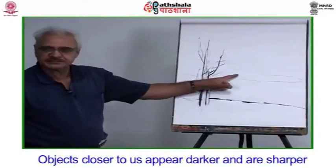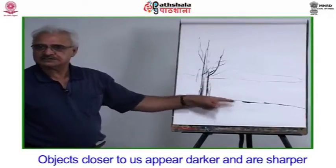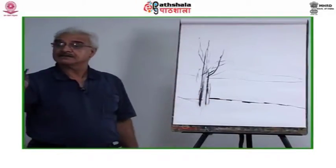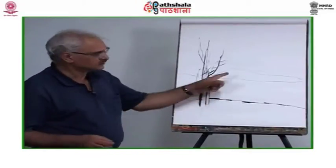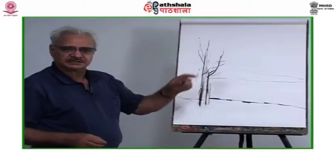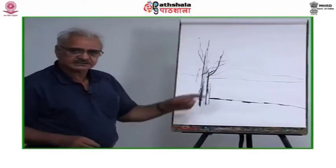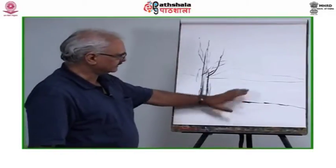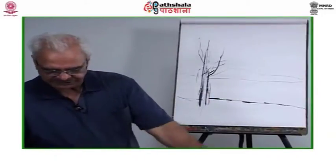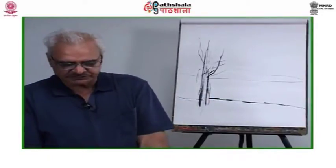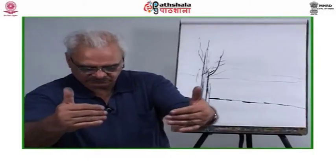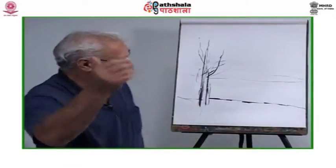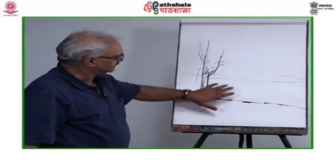Objects closer to us appear darker and are sharper. Things far off will be blurry and light. Try and demonstrate this concept by a half-closed eye view of things around. Stand in a large field or a mountain top to see how, as things go beyond our reach, they appear lighter in tone.